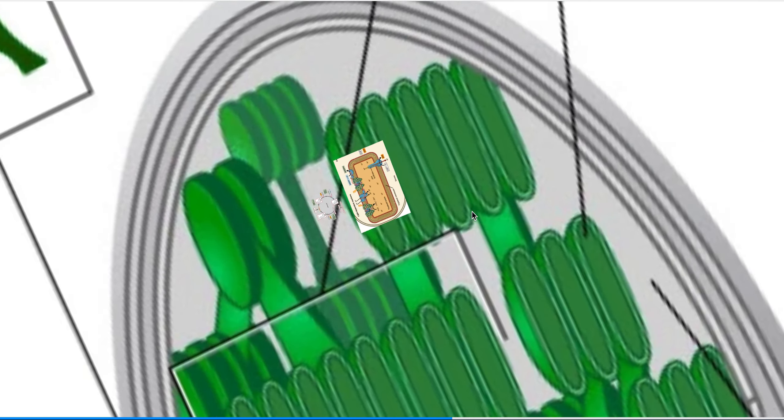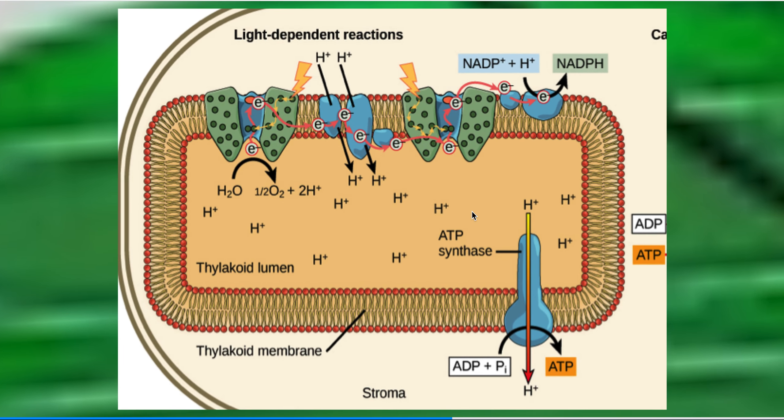So let's move in. We zoom in and we take a look at the first part of photosynthesis, and these are called light reactions because they directly harvest light.